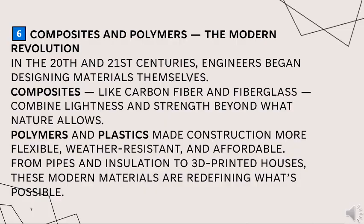Next is composites and polymers — the modern revolution. In the 20th and 21st centuries, engineers began designing materials themselves, such as composites like carbon fiber and fiberglass, which combine lightness and strength beyond what nature allows. We also have polymers and plastics, which made construction more flexible, weather resistant, and affordable — from pipes and insulation to 3D printed houses. These modern materials are redefining what's possible.